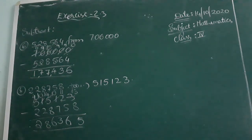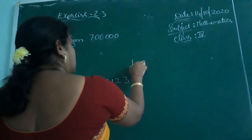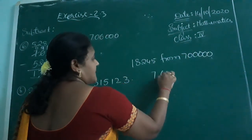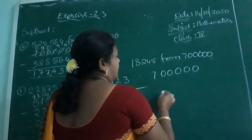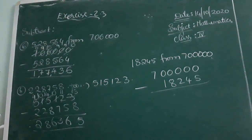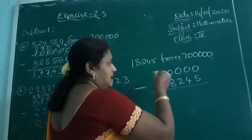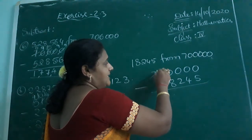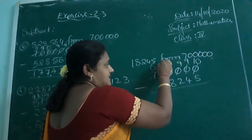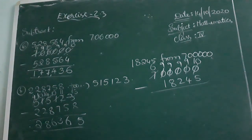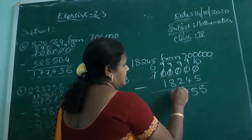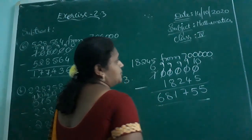If zeros are given — one more sum: 18,245 from 7 lakh. So 7,00,000 minus 18,245. All the numbers are zeros — only one number is 7. You have to borrow from this number. 7 minus 1 is 6. This number becomes 10. The before digits become 9. However many zeros were given before the number, that many 9's you have to write. 10 minus 5 is 5. 9 minus 4 is 5. 9 minus 2 is 7. 9 minus 8 is 1. 9 minus 1 is 8. 6.